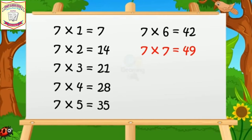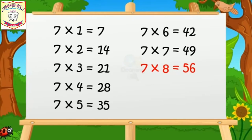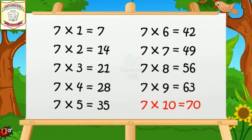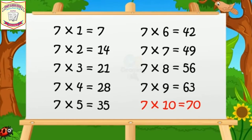Seven sevens are forty-nine. Seven eights are fifty-six. Seven nines are sixty-three. Seven tens are seventy.